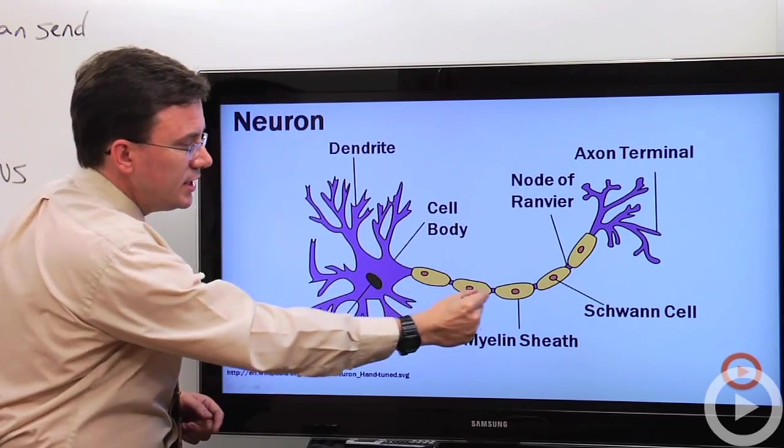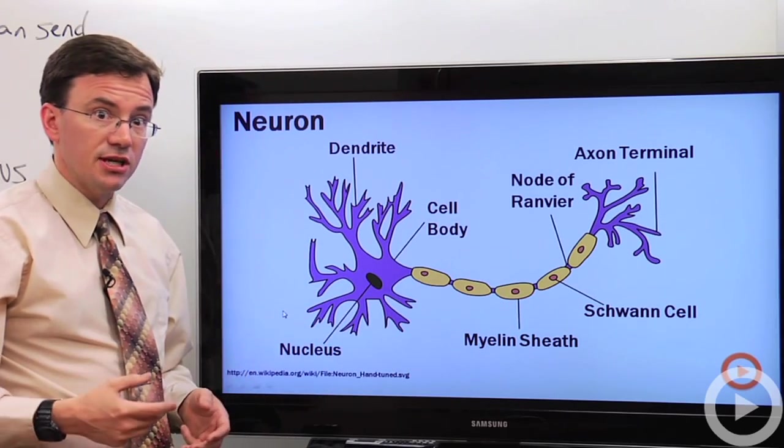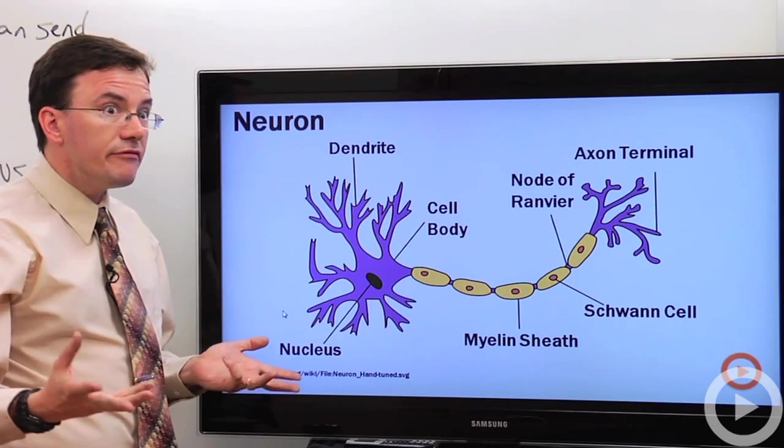Now, in between each Schwann cell, you have these nodes called nodes of Ranvier. Now, that's French. It's not nodes of Ranvier. It's Ranvier.